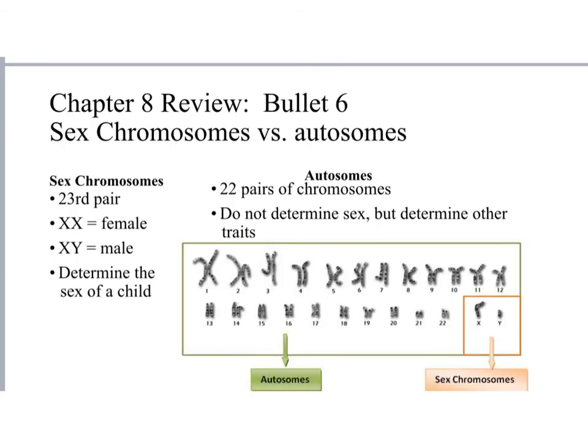Next, know sex chromosomes versus autosomes. Sex chromosomes are the 23rd pair — XX determines female, XY determines male. Autosomes are the other 22 pairs; they do not determine sex but determine all other traits.